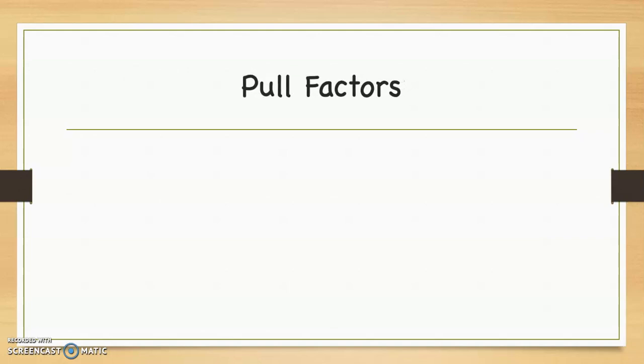Pull factors are going to draw people to a place, and we're going to have the three same types of pull factors that we have with push factors. So there are political reasons that people are drawn to a place. Freedom and democracy is one of the most obvious ones. Say what you want. Read what you want. Do what you want. Vote.